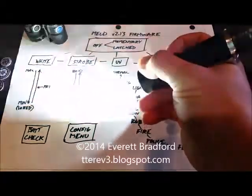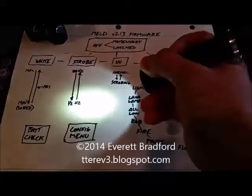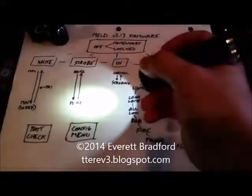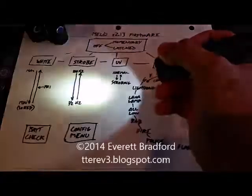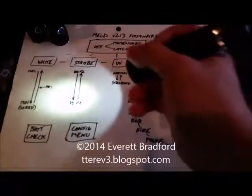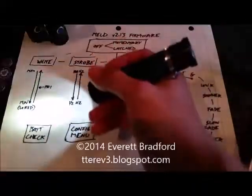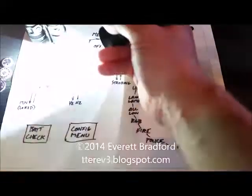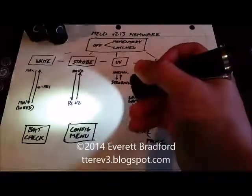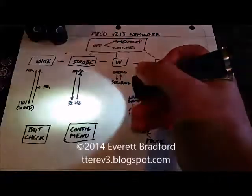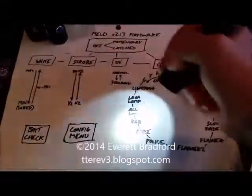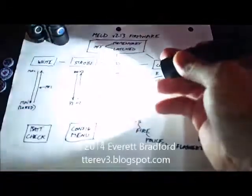Back to the menu. The next option, indicated by a double blink, is primary. This lets you set where your primary level is by going to that level, then entering the configuration menu and activating that option.